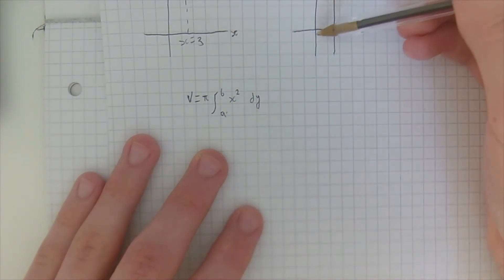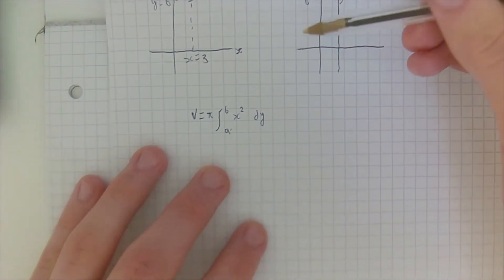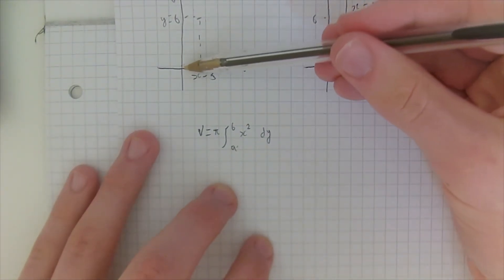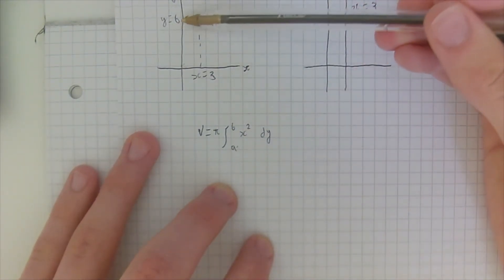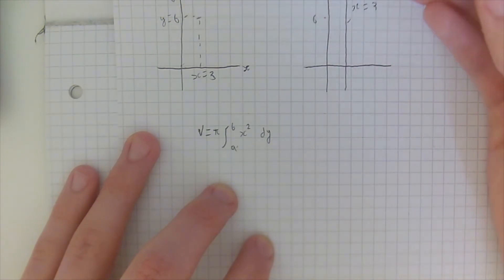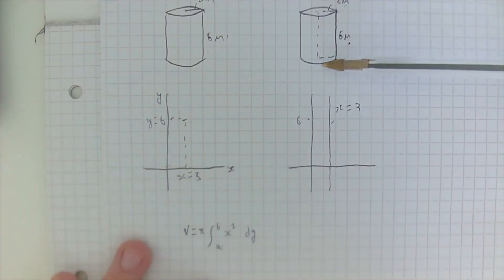Now of course a here is going to be the origin, which is the base of our rectangle here, and b is going to be six, which is the height of our cylinder.